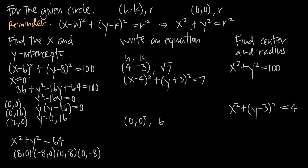For the example where the center is at the origin, h and k are both zero, so we use the simpler formula x squared plus y squared equals r squared. With radius equal to 6, r squared equals 36. So the equation is x squared plus y squared equals 36. This is the equation for a circle centered at the origin with a radius of 6.